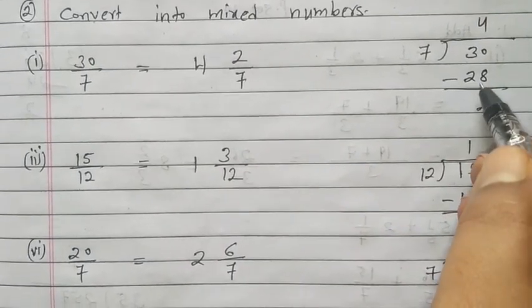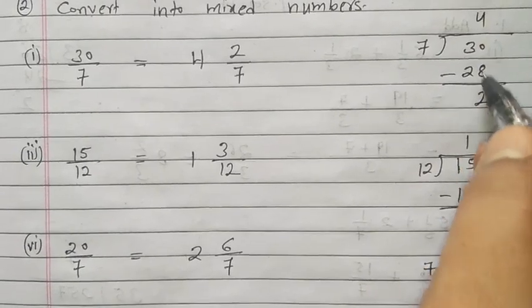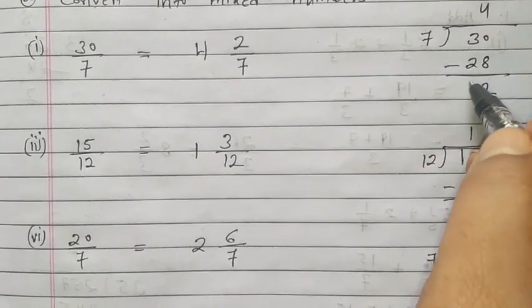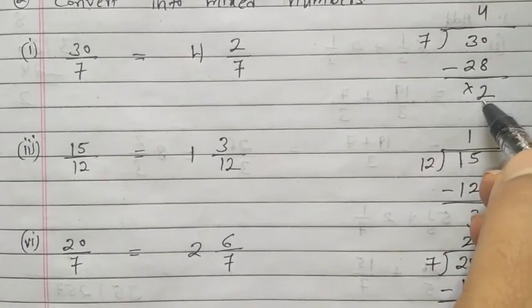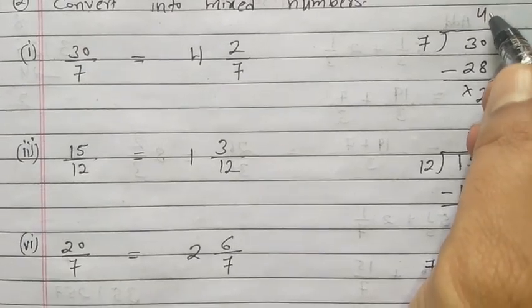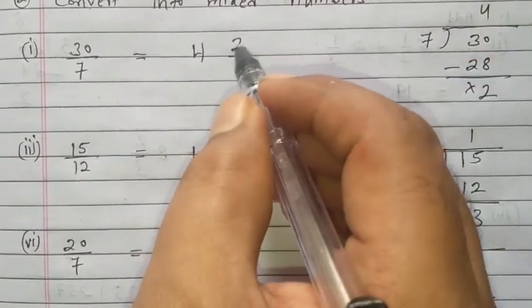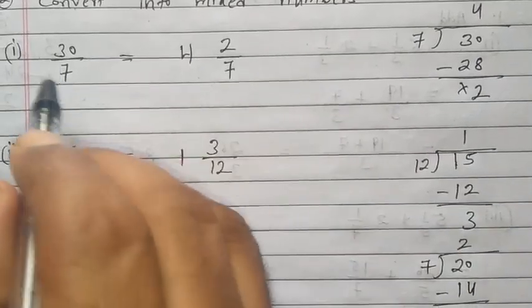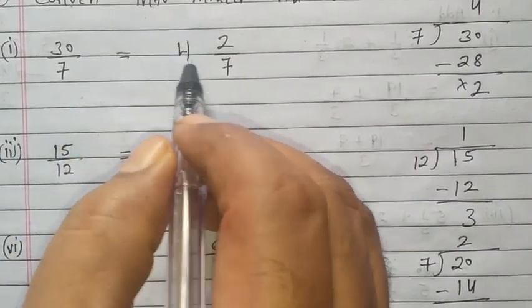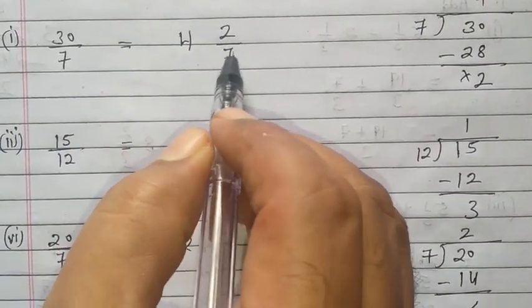7 fours are 28. Now subtract. 10 minus 8 is 2, 2 minus 2 cancel out. So what is left here? 2. So how we write in mixed number? 4 and this 2 upon 7. So 30/7 is equal to 4 2/7.